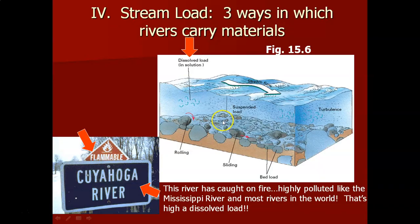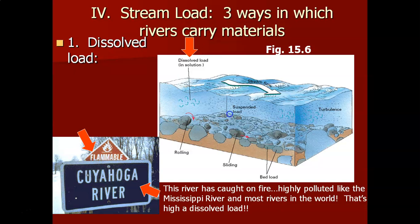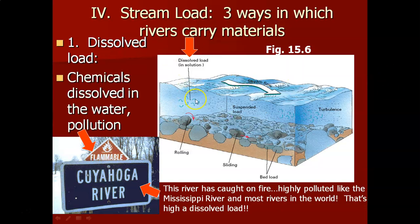The fourth topic is the stream load. Besides water, a river carries materials in three ways. The first is called the dissolved load — chemicals dissolved in the water. It's essentially pollution, and unfortunately most rivers in the world are highly polluted, resulting in a high dissolved load.